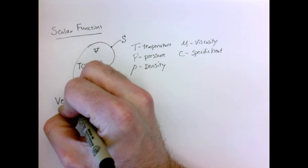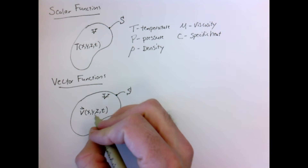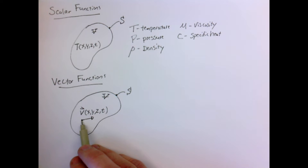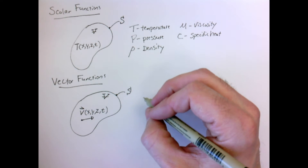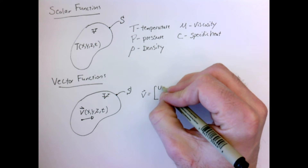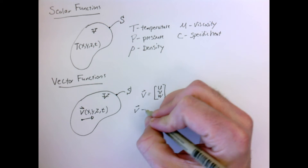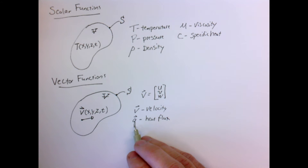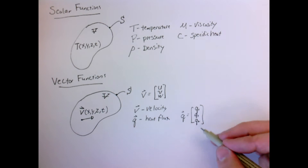We'll distinguish scalar functions from vector functions. An example of a vector function might be fluid velocity, defined as a function of x, y, z, and time. At every point we define it as an arrow — the velocity has a magnitude and a direction, which is why I write V with a little arrow over it. For velocity, we label the x, y, and z components u, v, and w. Another vector function we'll talk a lot about is heat flux, labeled as q, where we use a subscript to denote the x, y, and z components.